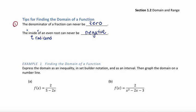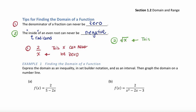Let's look at a quick example. If we have 2 over x, we know this x can never be 0 — that is an undefined operation. And if we have the square root of x, we know that this x can never be negative. So we can have the square root of 4, which gives us 2, but we cannot have the square root of negative 4.